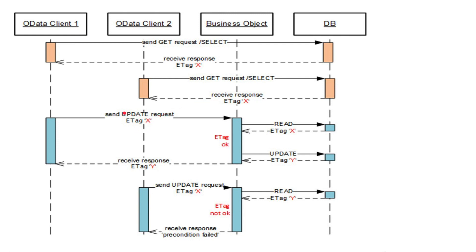Later, client 1 wants to update some data for the same record. So he sends the update request with ETag X. What would happen? It will try to read the ETag X value in the DB, and it finds out that the ETag value the user sent and the one in the DB are the same. Then it says it has been verified and no other request has changed this meanwhile, so it allows the update request.